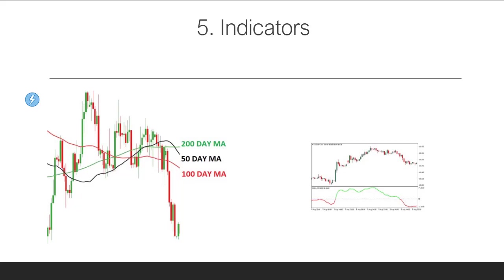Your checklist should include: What's the trend direction? Am I trading with the trend? What is price action telling me on the daily or four-hour chart? Do I see a break of a trend line? Then, for the indicators: Do I see a break of a certain moving average? What is the RSI telling me — is momentum slowing to the upside? Are we going to the downside? Those are all things you can add.